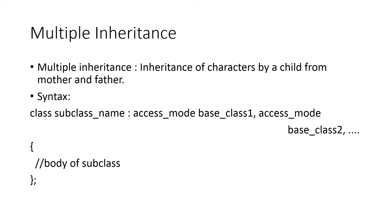Next is multiple inheritance. As we know, for multiple inheritance, one derived class will be there and many base classes will be there. The syntax is: class subclass_name, colon, access specifier of the first base class, base class name, access specifier of the second base class and the name of that, and so on. Then the body of the subclass. This is the general syntax of multiple inheritance.